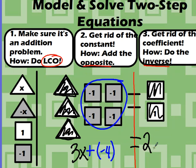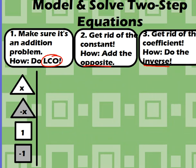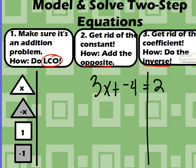So once we have the equation, all we have to do is to solve it like normal. So I'm going to get rid of all this, and we'll kind of bring this equation up here to the top. So 3x plus negative 4 equals 2. First step is to make sure it's an addition problem. We did that already. It is an addition problem. Most of the time when you build from a model, it is going to be an addition problem already.